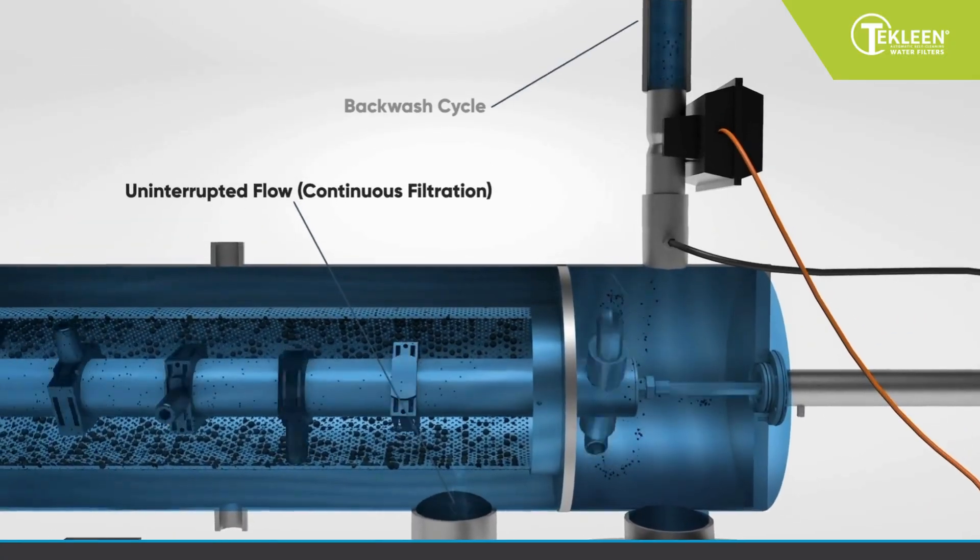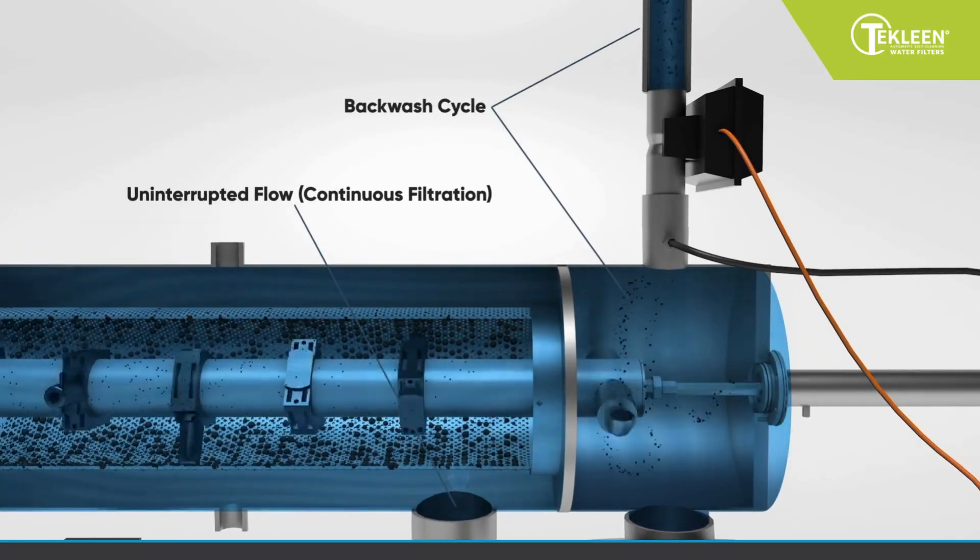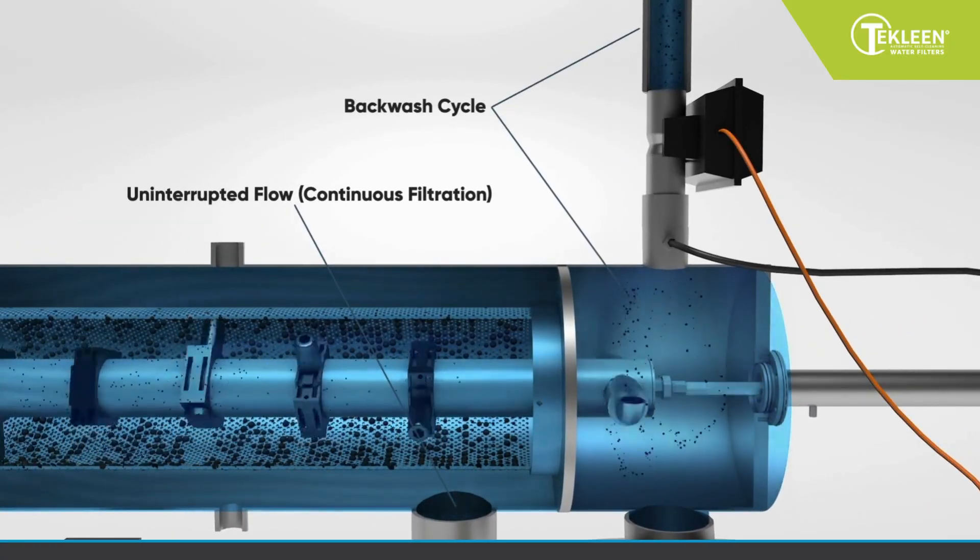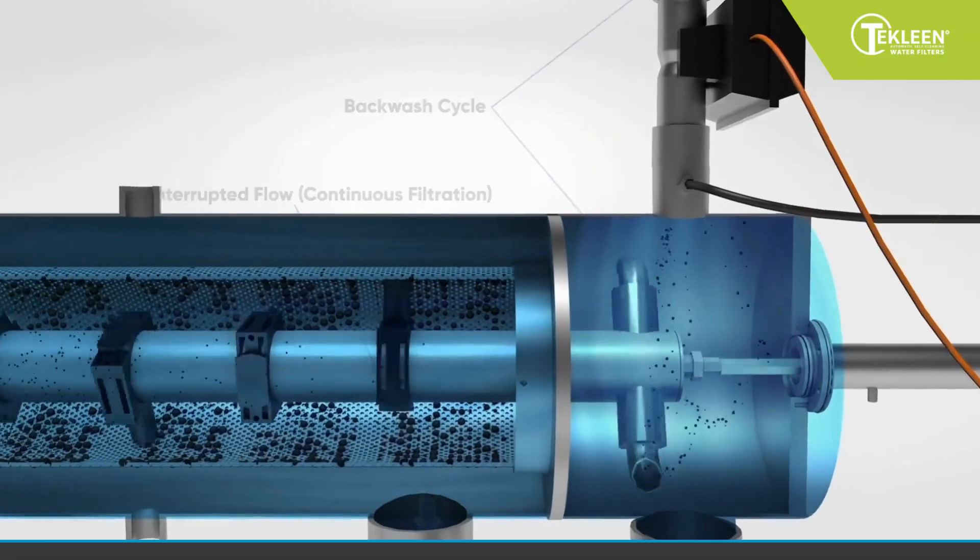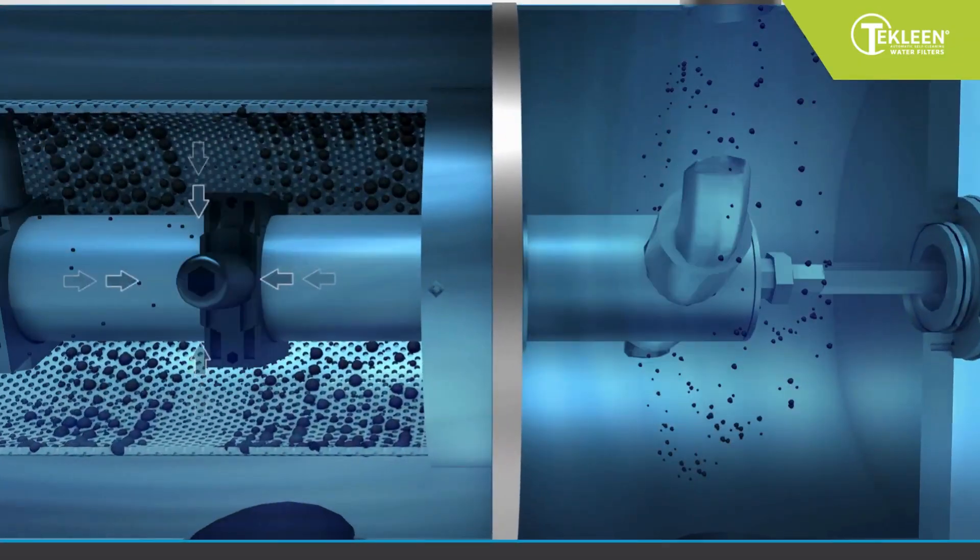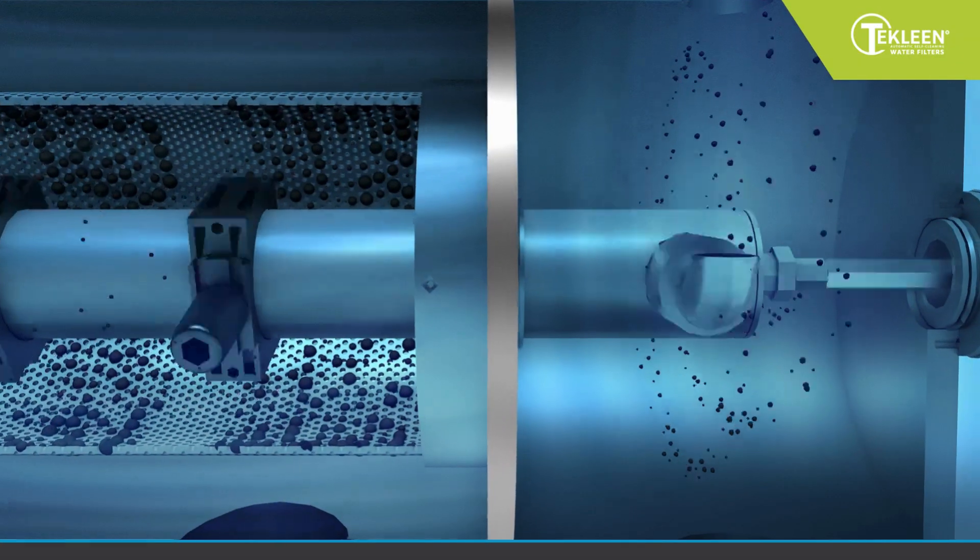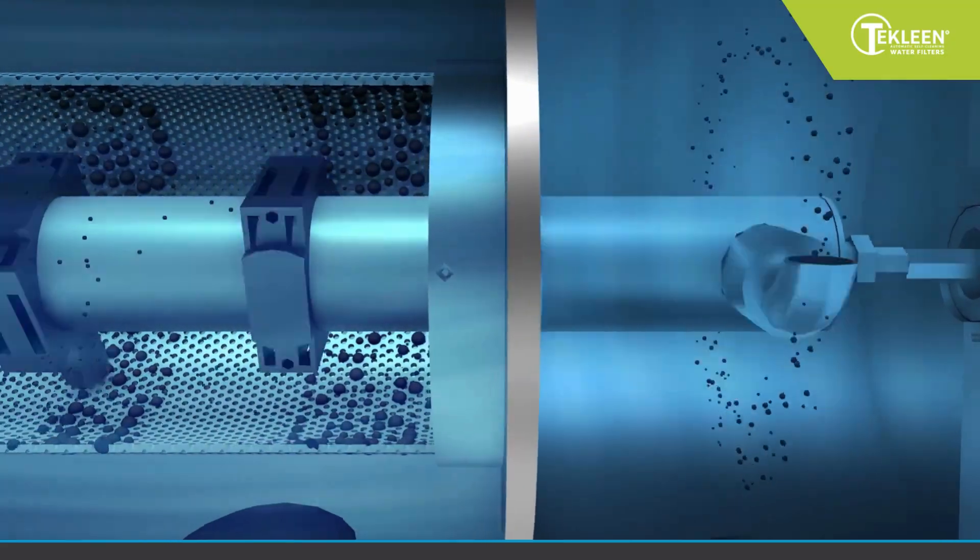There is uninterrupted flow during the backwash, allowing for continuous filtration. When the backwash cycle is triggered, the dirt collector moves linearly and axially, suctioning the entire surface area of the fine screen.